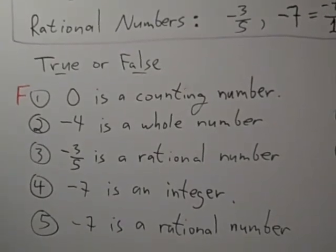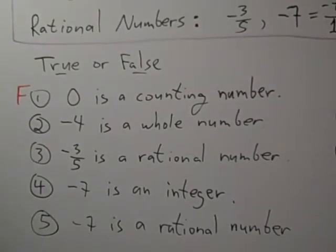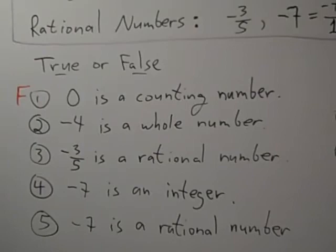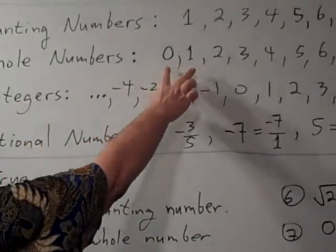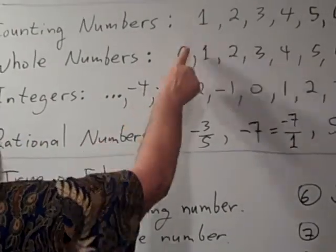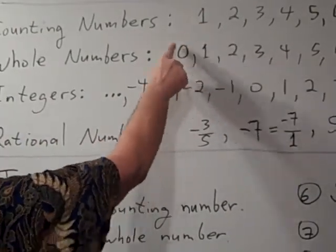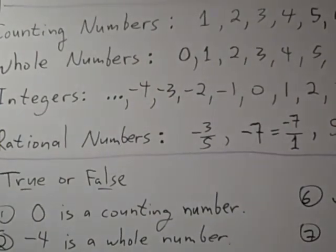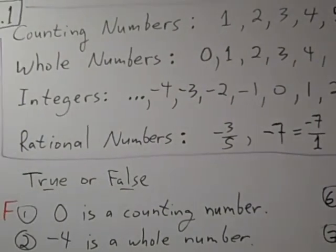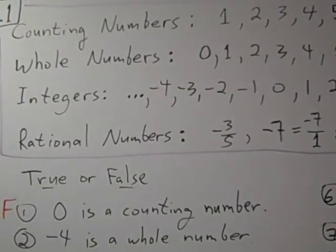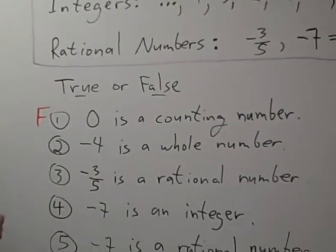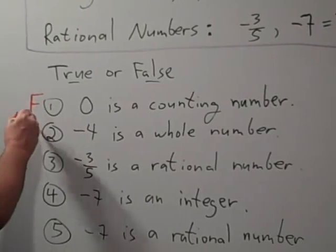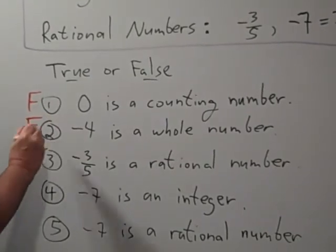Number 2 says negative 4 is a whole number. Look at the whole numbers — they are just like the counting numbers, except you have an additional number, zero, to start off that list. So negative 4 is not a whole number. It's false.